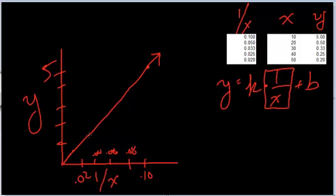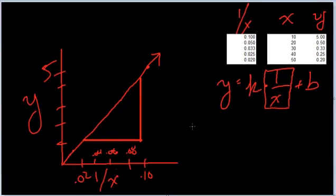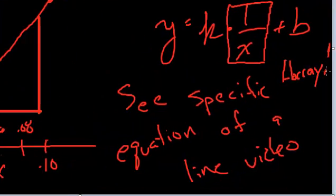That line will then have a k value. That k value will match up with the k value from the original function. It will also have a b value that also matches up from the original function. And if you want to figure out how to find those two, then go to the video on finding the specific equation of a line. Hooray!